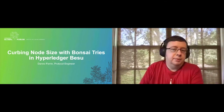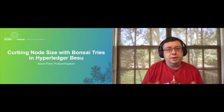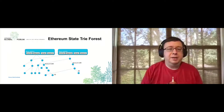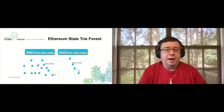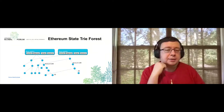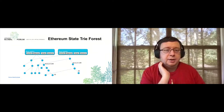When I say node size, I'm talking about the amount of disk space that a node takes up as it progresses through the blockchain. To understand why node growth is such a problem, you need to understand how Hyperledger Besu stores its data — which is dictated by Ethereum. In each Ethereum block there is a state root.